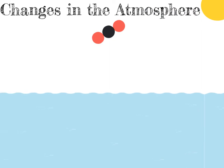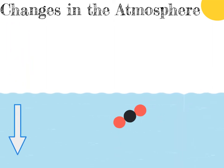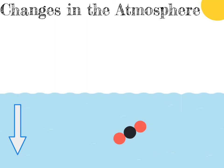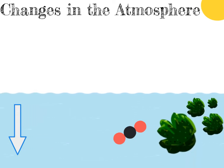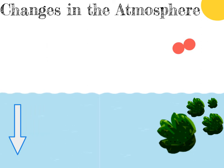Now that we have oceans, we can consider what happened to all of the carbon dioxide in the atmosphere. One of the things that happened was that some of the carbon dioxide dissolved into the oceans. Carbon dioxide dissolves better at cooler temperatures, so as the Earth continued to cool, more and more carbon dioxide dissolved into the oceans. Eventually we start to see the evolution of photosynthetic life forms like algae, and if you're asked about the removal of carbon dioxide from the atmosphere, you need to mention the keyword photosynthesis.